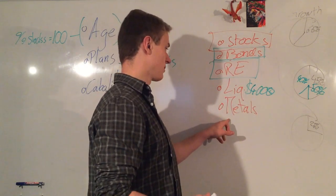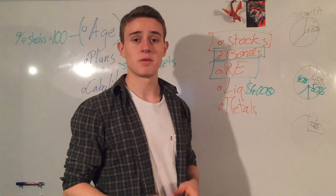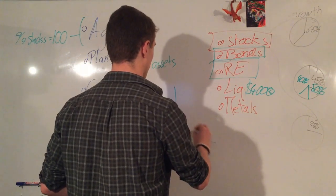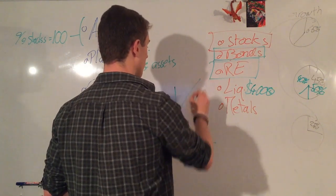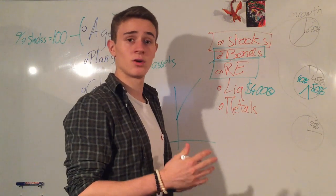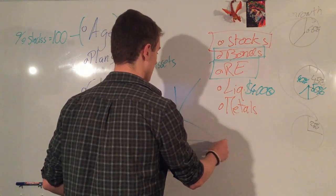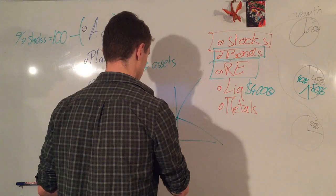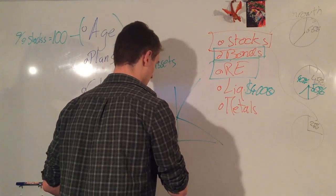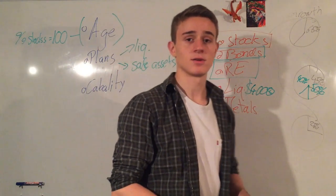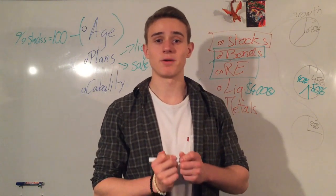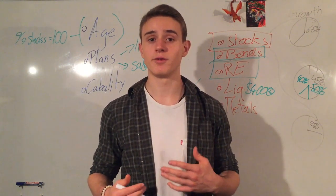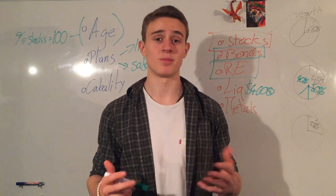The last asset class is metals. Metals are known to counteract the market — when the market goes up, metals usually, but not always, go down; when the market goes down, metals will go up. So metals are a very good investment for diversifying if you want to avoid a market crash.